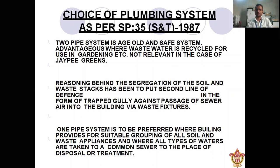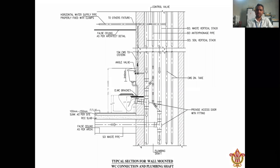The choice of plumbing system as per SP 35 of 1987 — this code guides our system choice. You can see on the image a typical section for a wall-mounted WC connection and plumbing shaft, showing the waste vertical stack, anti-siphoning pipe, soil vertical stack, angle valve, and WC bracket.